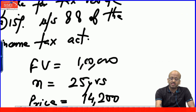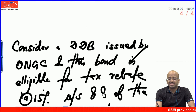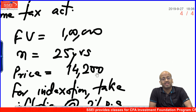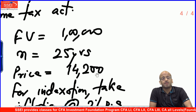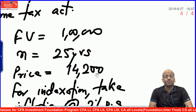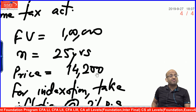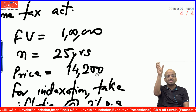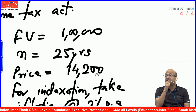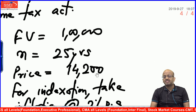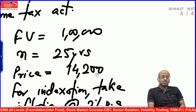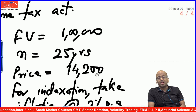The way I would look at the sum: in a ZCB, if the entire tax problem were not there, the solution would have been 14,200 = 1 lakh divided by (1 + r)^25. So now I understand that instead of 14,200 I need to put some other figure, and instead of 1 lakh I need to put some other figure. Something equals something divided by (1 + r)^25. Instead of 14,200, what will the figure be? What are you paying out of your pocket? 12,000...